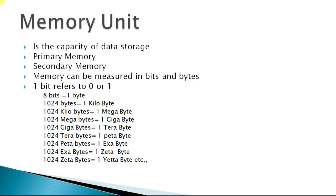1024 bytes will give you 1 kilobyte. 1024 kilobytes will give you 1 megabyte. 1024 megabytes will give us 1 gigabyte. 1024 gigabytes is equals to 1 terabyte. 1024 terabytes is equals to 1 petabyte. 1024 petabytes is equals to 1 exabyte. 1024 exabytes is equals to 1 zeta byte. 1024 zeta bytes is equals to 1 yetabyte etc.